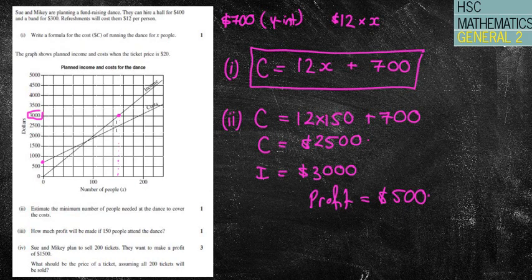Likewise you could have just gone straight through here and said for 150 people gone straight up to my line and said that's my cost. That's my income. Therefore the difference is one block there which is $500. That's probably an easy way of doing it to be honest with you.